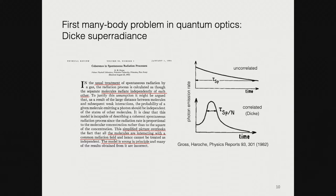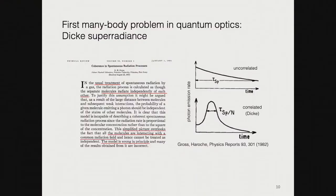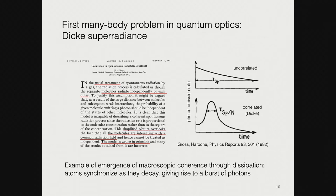The idea of Dicke superradiance is the following. If we have a bunch of atoms placed very far away from each other so they don't interact, we flip all these atoms, they will decay and radiate photons independently, as if they are alone. On the other hand, if we place them very close to each other or in a cavity, they share a radiative environment. When they decay collectively, the process of photon emission drives correlations between them, producing a very rapid release of photons in a burst. This is an example of emergence of macroscopic coherence through dissipation.